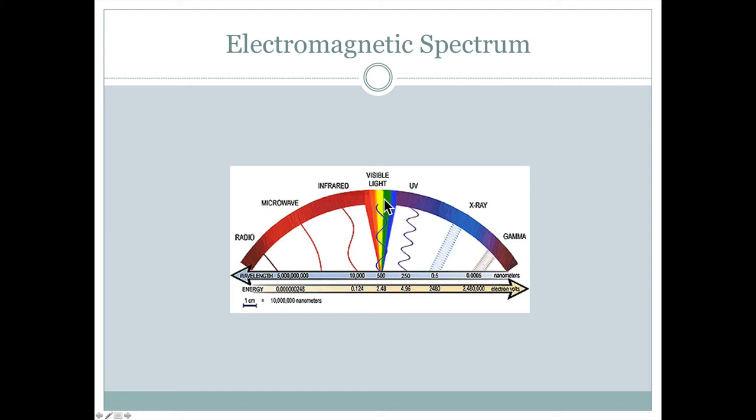And right in the middle of that, in this diagram, is the visible light that we see. So we'll talk about how we can measure different parts of the electromagnetic spectrum separately, and then how we can display and analyze that data as remote sensing imagery once we have that.